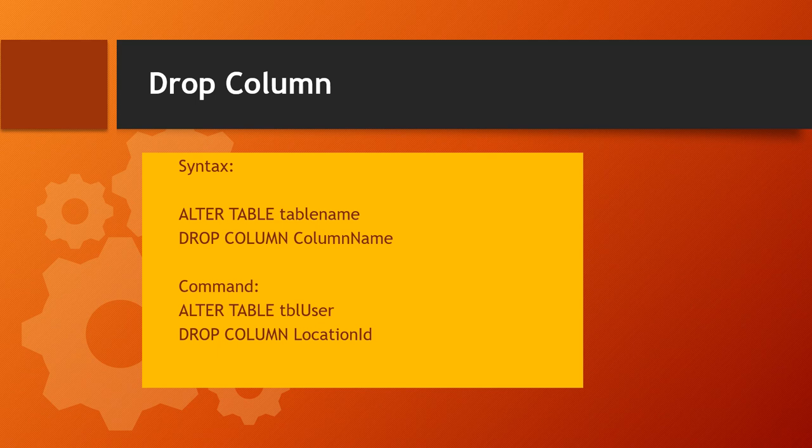Here is the syntax for DROP COLUMN. If you have a table with columns that are not required, you can drop a column using: ALTER TABLE table_name DROP COLUMN column_name. For example: ALTER TABLE tbl_user DROP COLUMN location_id — where tbl_user is the table name and location_id is the column name.